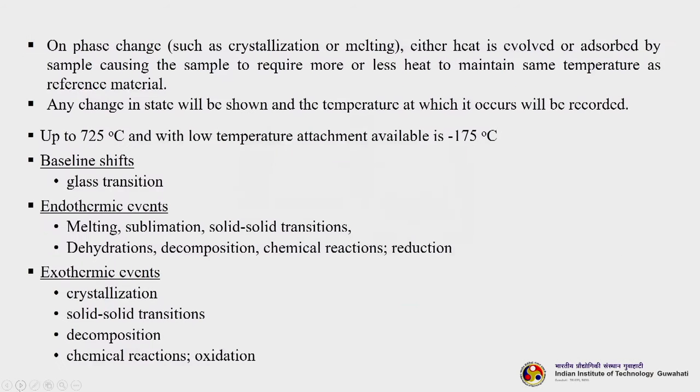The heat flow is recorded as a function of time or temperature. On phase change such as crystallization or melting, heat is either evolved or absorbed, causing the sample to require more or less heat to maintain temperature. Any change in state is shown and the temperature at which it occurs is recorded. DSC typically operates from about −175°C up to 725°C. When the baseline shifts in the DSC curve, the glass transition region is occurring. Endothermic events include melting, sublimation, solid-solid transitions, dehydration, decomposition, and chemical reactions/reduction. Exothermic events include crystallization, solid-solid transitions, decomposition, chemical reactions, and oxidation.